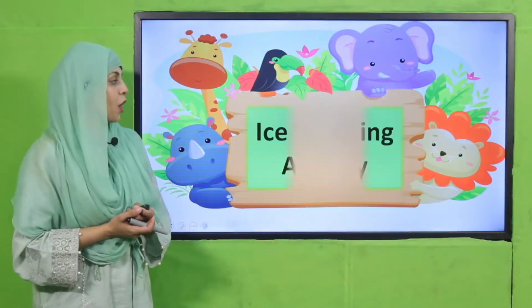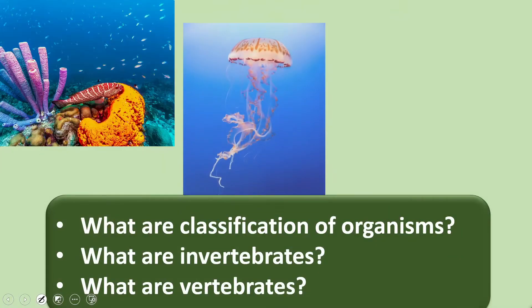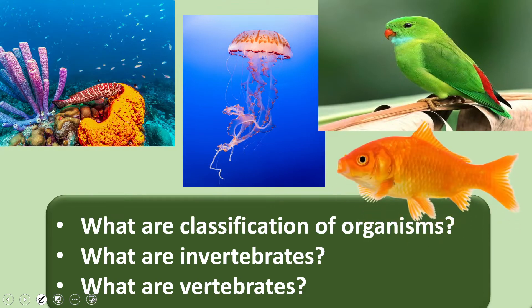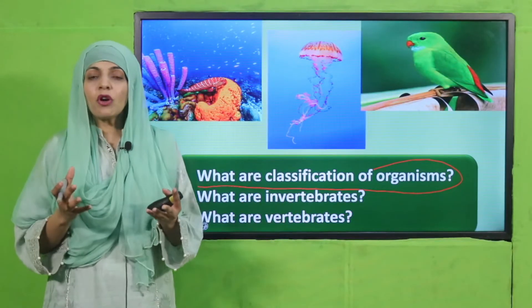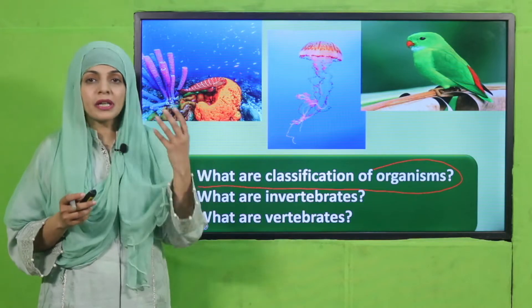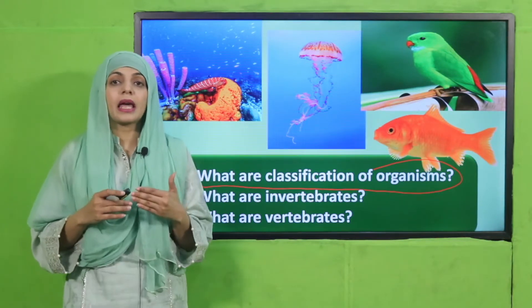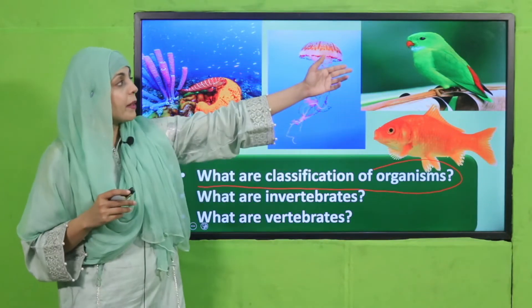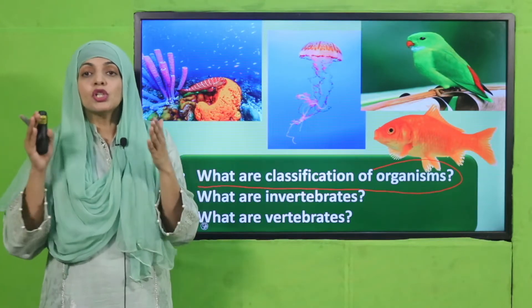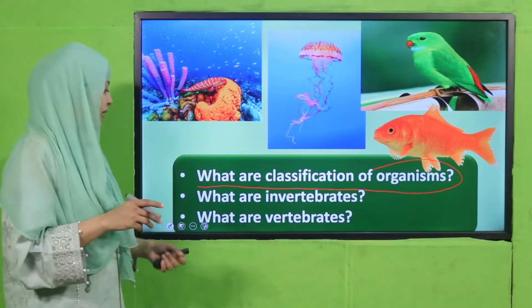My dear students, now let's move forward towards an activity. Look at the pictures very carefully and then answer these questions. Here you can see different animals — sea animals, a bird, a fish. Quickly tell me: what are the classifications of organisms? The grouping of animals is called classification. There are different types of animals — some fly, some swim. You can see corals, a jellyfish, a fish, and a parrot or bird. This grouping of living organisms is called classification.